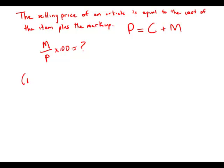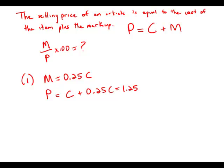Statement number one tells us that the markup on the television is 25% of the cost. So markup equals 0.25 times cost. That means the selling price equals the cost plus 0.25 of the cost, which is 1.25 of the cost. This gives us enough information — if we divide markup by selling price, the C's would cancel and we'd be able to figure out the percentage.